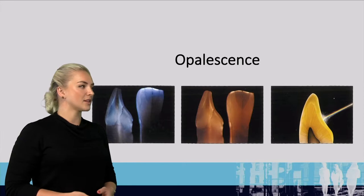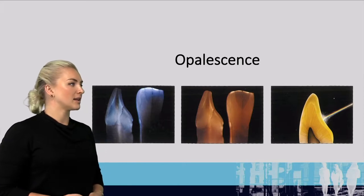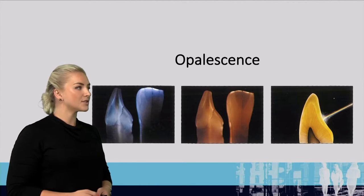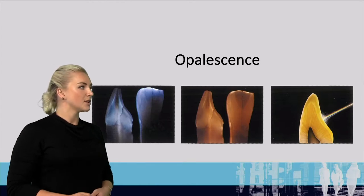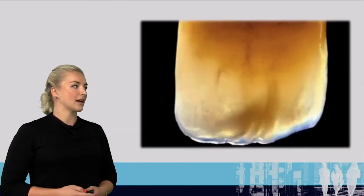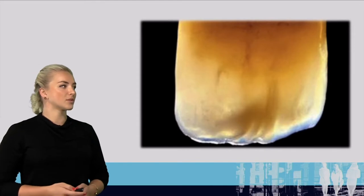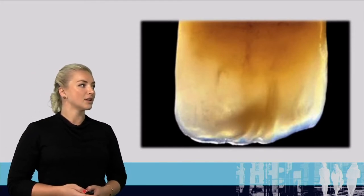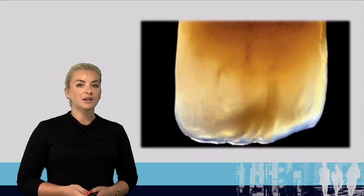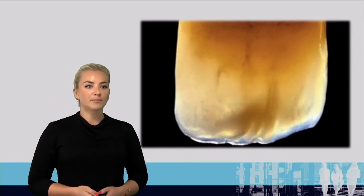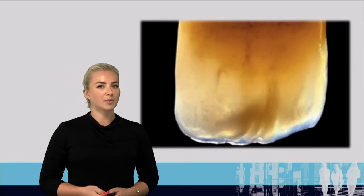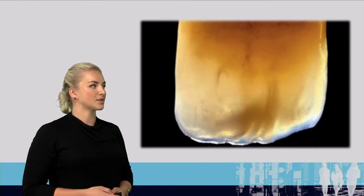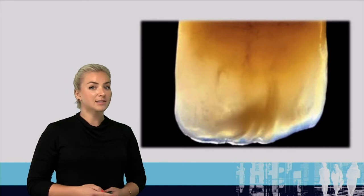Everything depends on the placement of the object, the observer, and the light source. When we look at a natural tooth you can see both the bluish, which is part of the enamel color, and then the reddish color — but you don't really understand what opalescence is until you also understand where you place the lights.